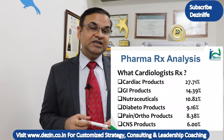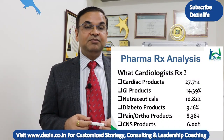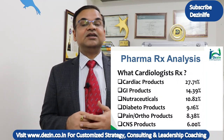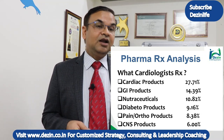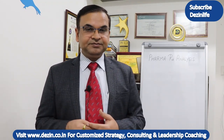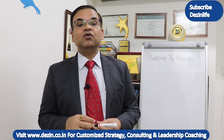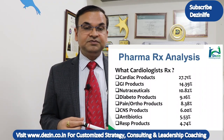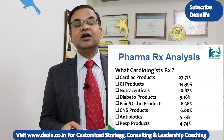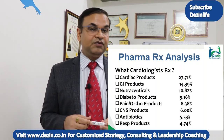Next comes CNS drugs — 6% of cardiologist prescriptions contain CNS drugs. How many CNS companies or divisions are covering cardiologists? Not many. Whether they are writing benzodiazepines or other categories, those prescriptions have longevity. I would suggest CNS companies should cover cardiologists rather than allowing cardiologists to write anxiolytics or CNS drugs they may not be very well aware of. Antibiotics account for 5.53%, and the respiratory segment is 4.74% of cardiologist prescriptions — again a huge number, and I doubt whether companies with exclusive respiratory products are covering cardiologists.